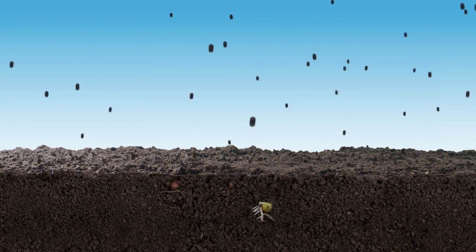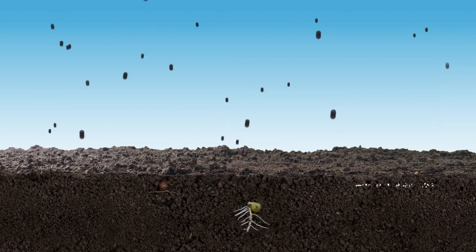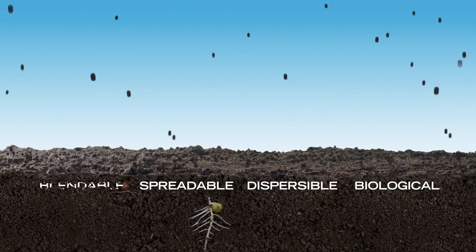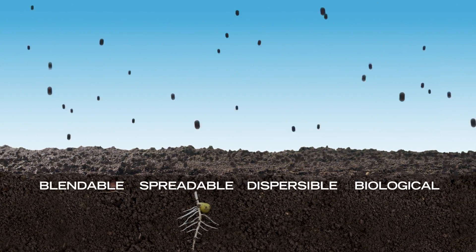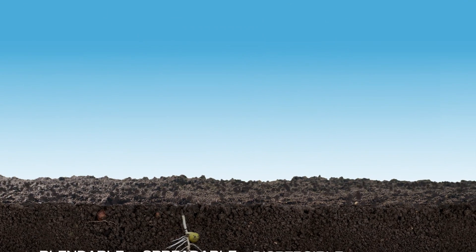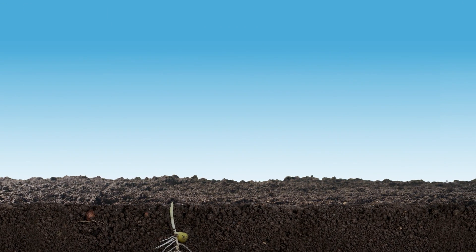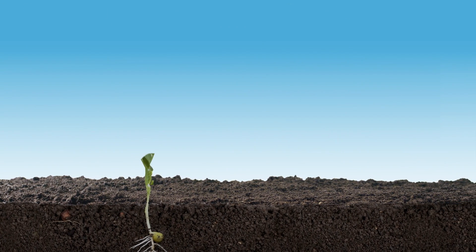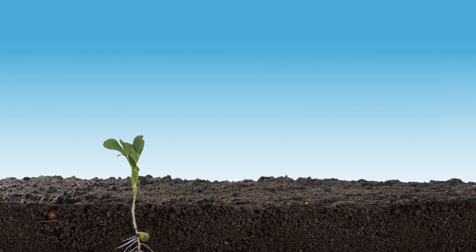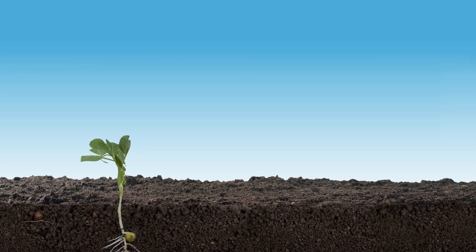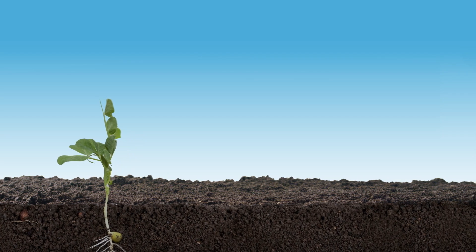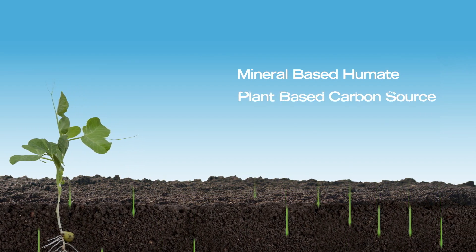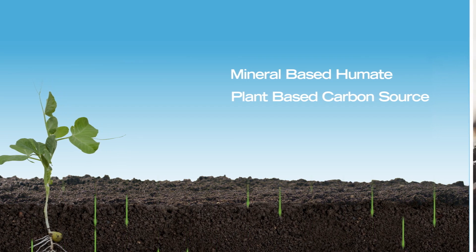These granules are biological, dispersable, spreadable, and blendable. While the majority of products on the market today offer strictly mineral-based humic substances, Humic DG provides both a mineral-based humate and a plant-based carbon source.